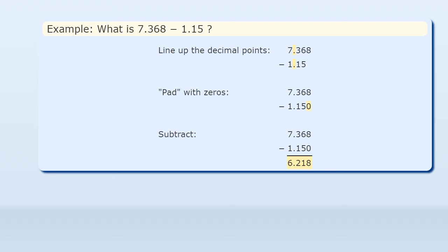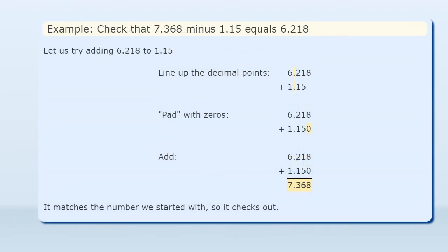To check, we can add the answer to the number subtracted. Let us try adding 6.218 to 1.15. Line up the decimal points, pad with zeros, then add. It matches the number we started with, so it checks out.